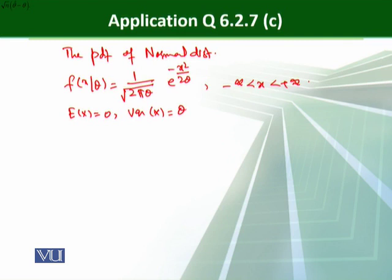Now, first of all, we need the log function of this one. So the log of f, that is equal to, constant 1 over 2 pi, as it is we can write here because the parameter is involved. So the next, that is minus 1 over 2, log theta minus x square.